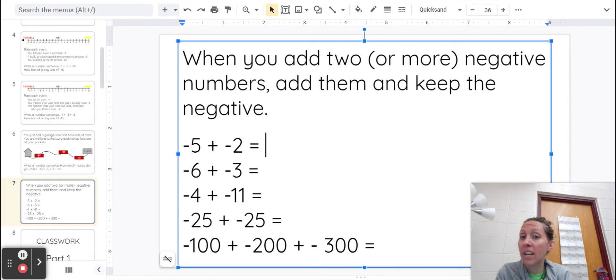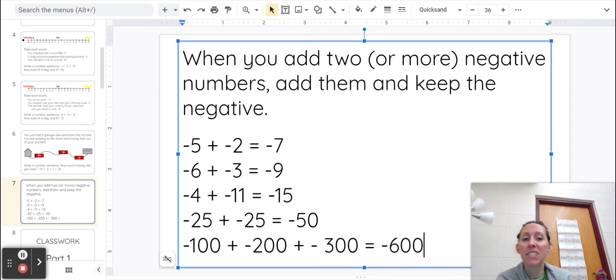So negative 5 plus negative 2 is negative 7. Negative 6 plus negative 3 is negative 9. Negative 4 plus negative 11 is negative 15. Negative 25 plus negative 25 is negative 50. And negative 100 plus negative 200 plus negative 300 is negative 600.